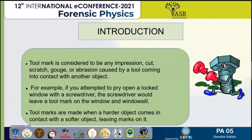Toolmarks are considered like an impression. They can be in the form of cut, scratch, gauge or abrasion caused by any tool coming in contact with another object. For example, if you attempt to open a locked window with a screwdriver, the screwdriver would leave a toolmark on the window or windowsill. Toolmarks are made when a harder object comes in contact with a softer object, leaving marks on it.